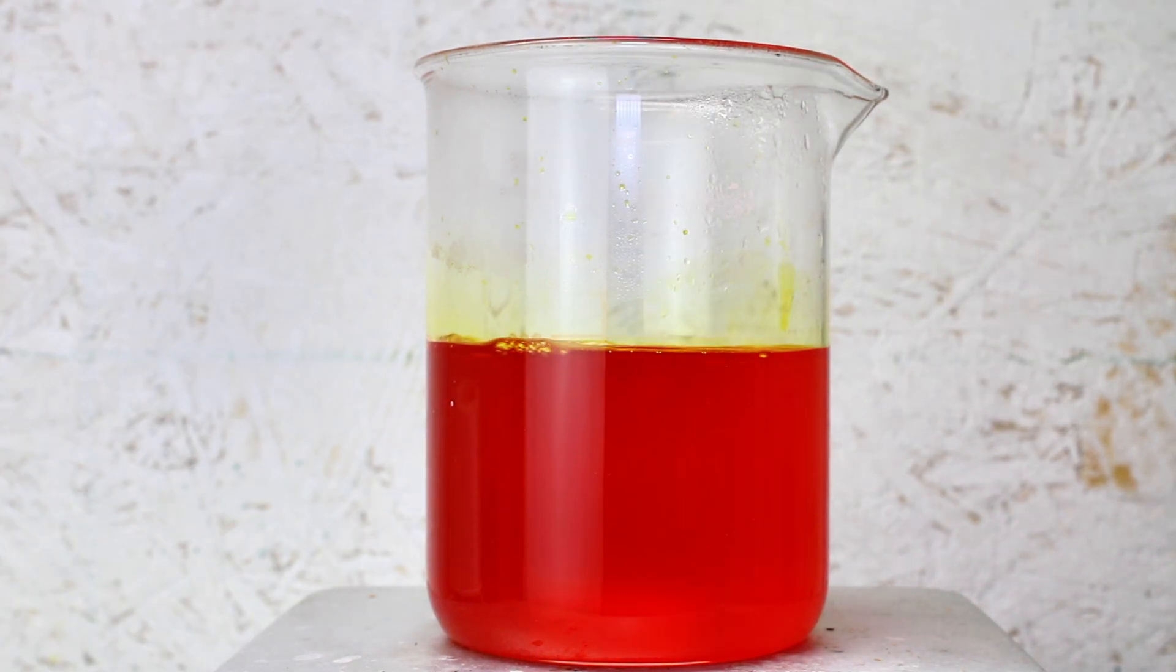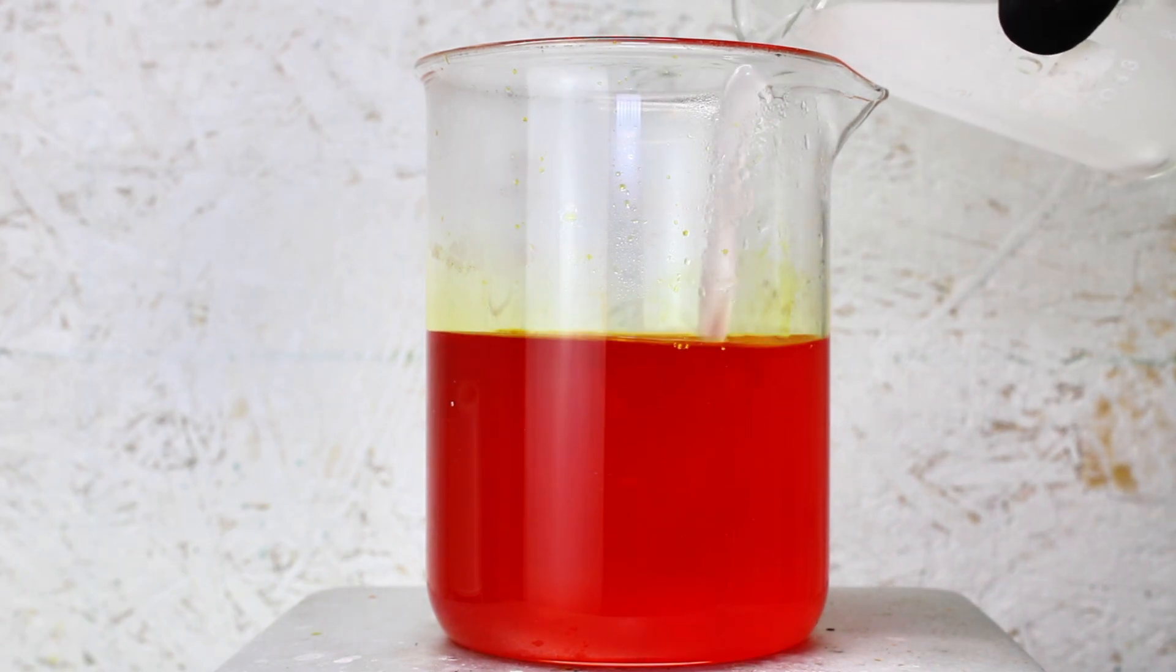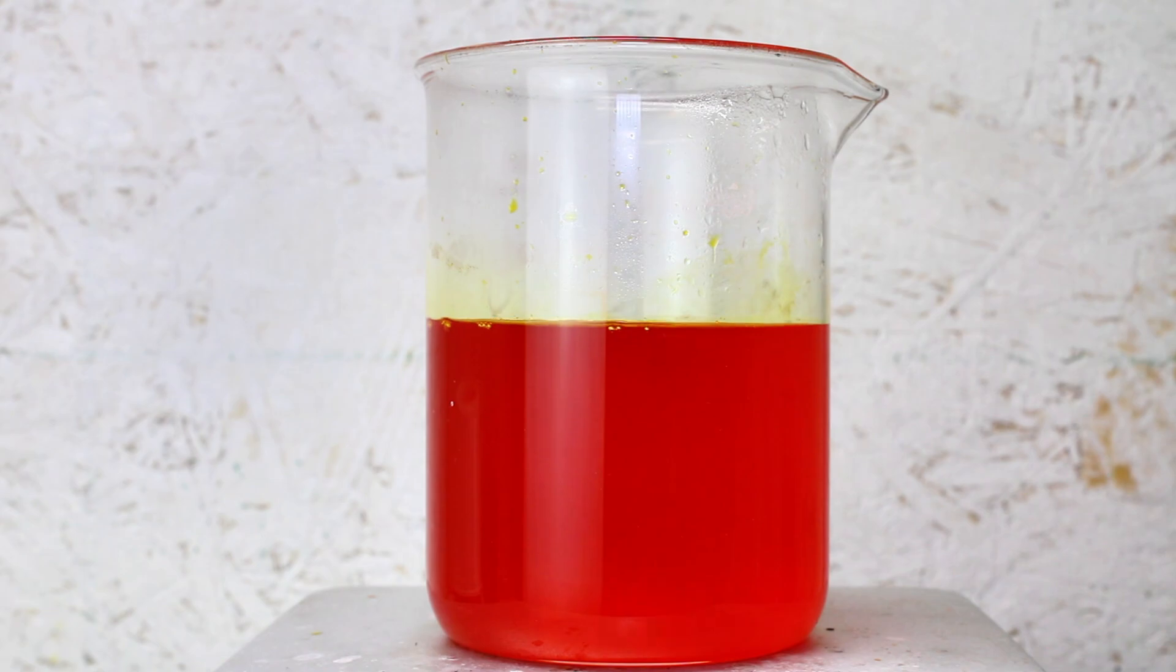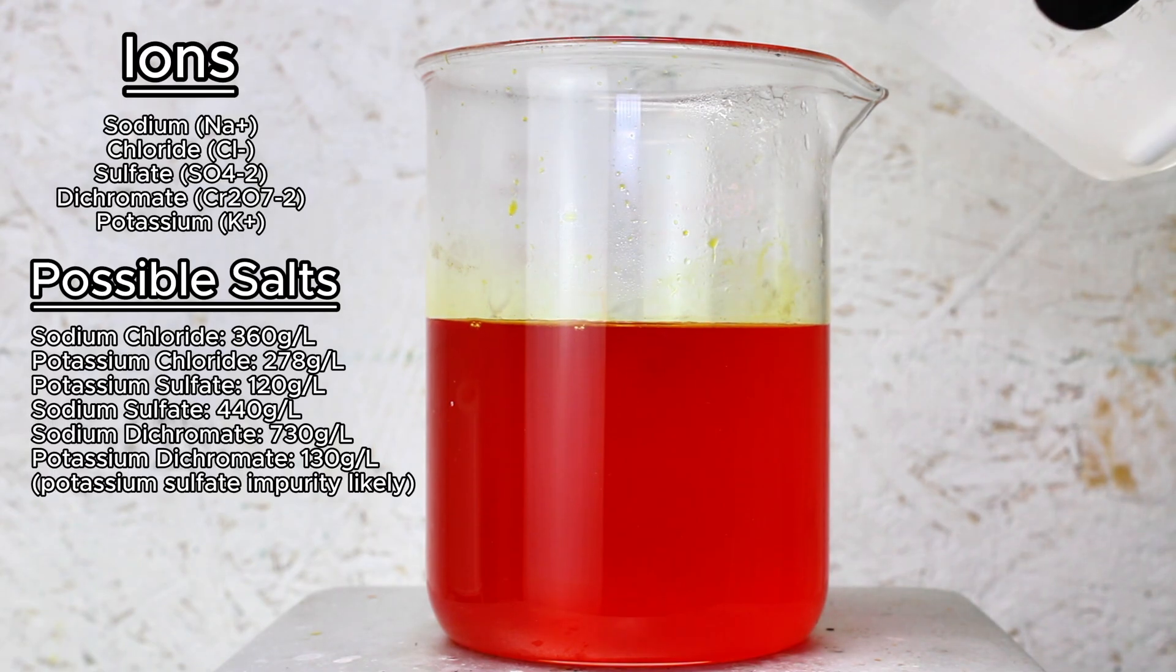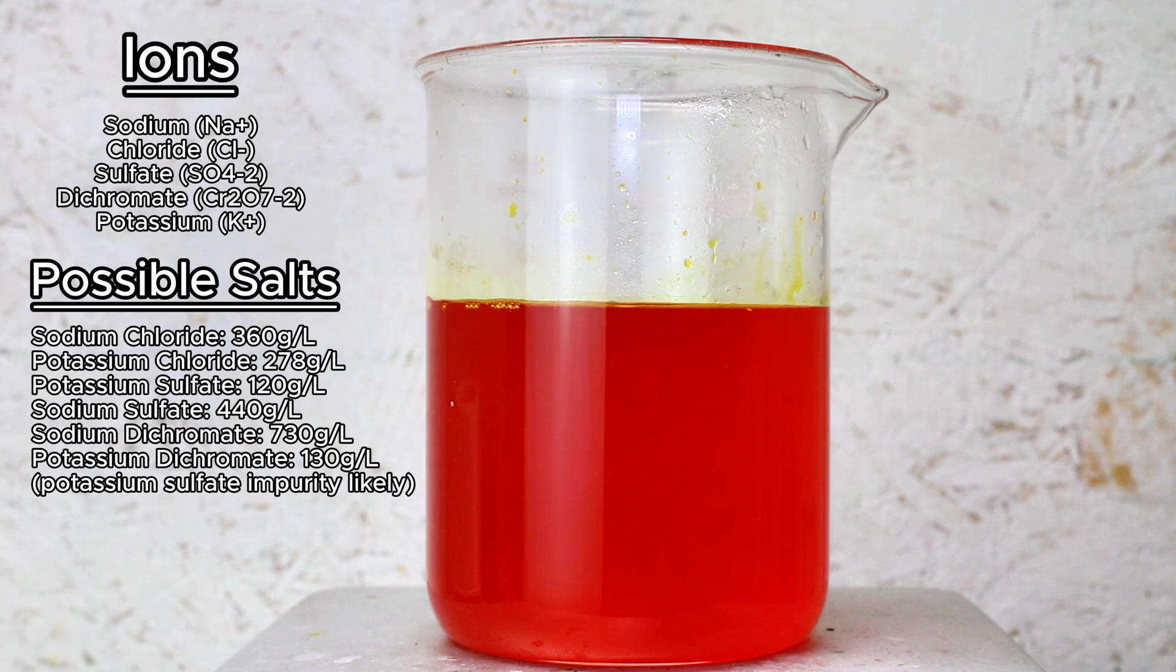Potassium dichromate can be selectively precipitated from solution here because as of right now, the ions floating around in solution include sodium and chloride from the bleach, potassium and chloride from the potassium chloride, a bit of sulfate and dichromate. And of the salts that can form, potassium dichromate has by far the lowest solubility.